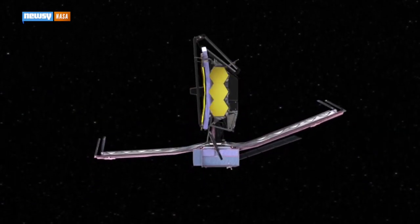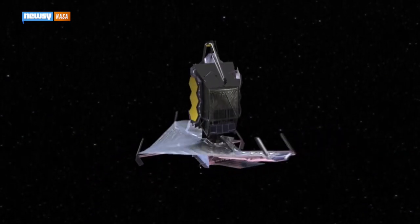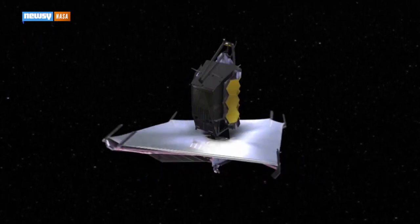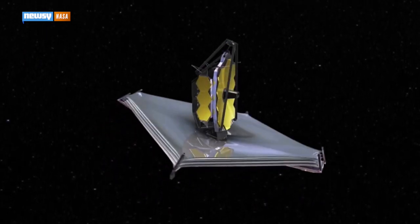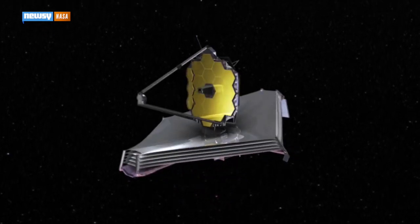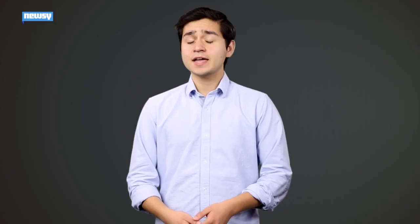And NASA plans to look pretty far with the James Webb Space Telescope, Hubble's successor. NASA says it will be able to see as far as 13 billion years back, putting it as close to the start of the universe as scientists have ever gotten. That's still a ways off, though. NASA plans to launch the JWST in October 2018.